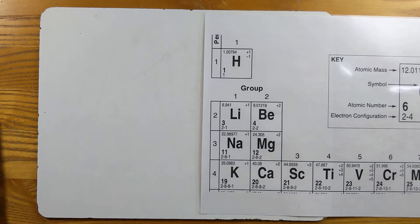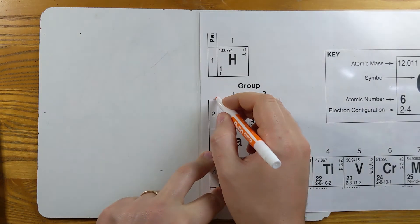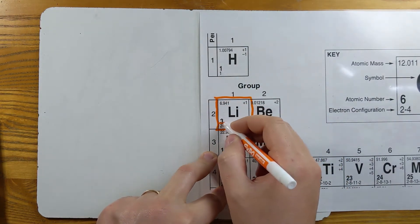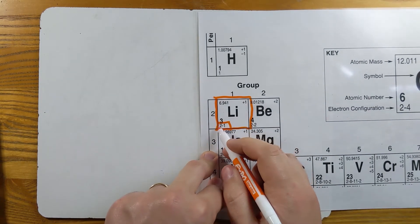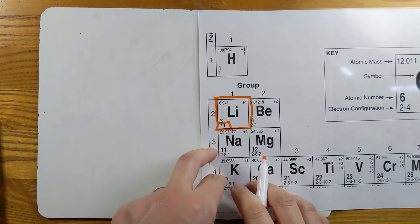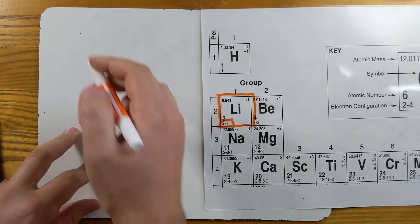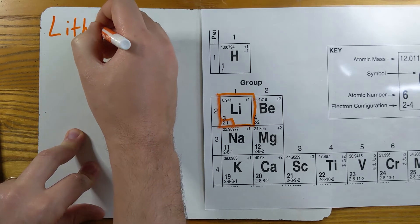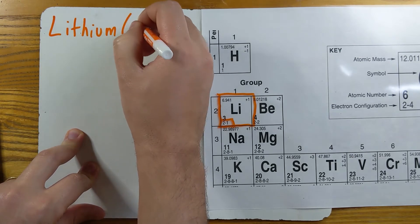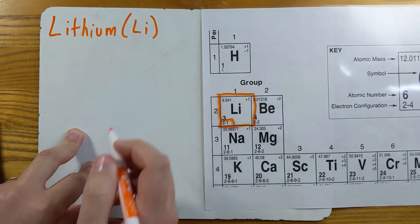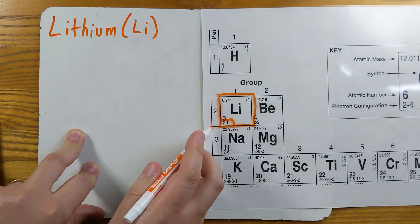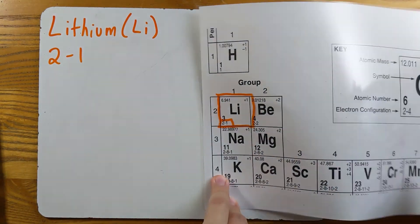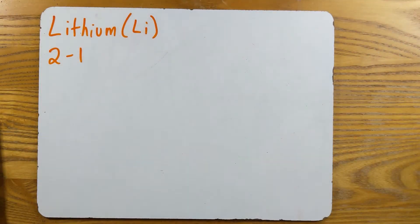Let's look at another example — lithium, or Li. The electron configuration is on the bottom left of the element tile. Element name: lithium, symbol Li, and the electron configuration is 2-1. That's all I need from the periodic table.